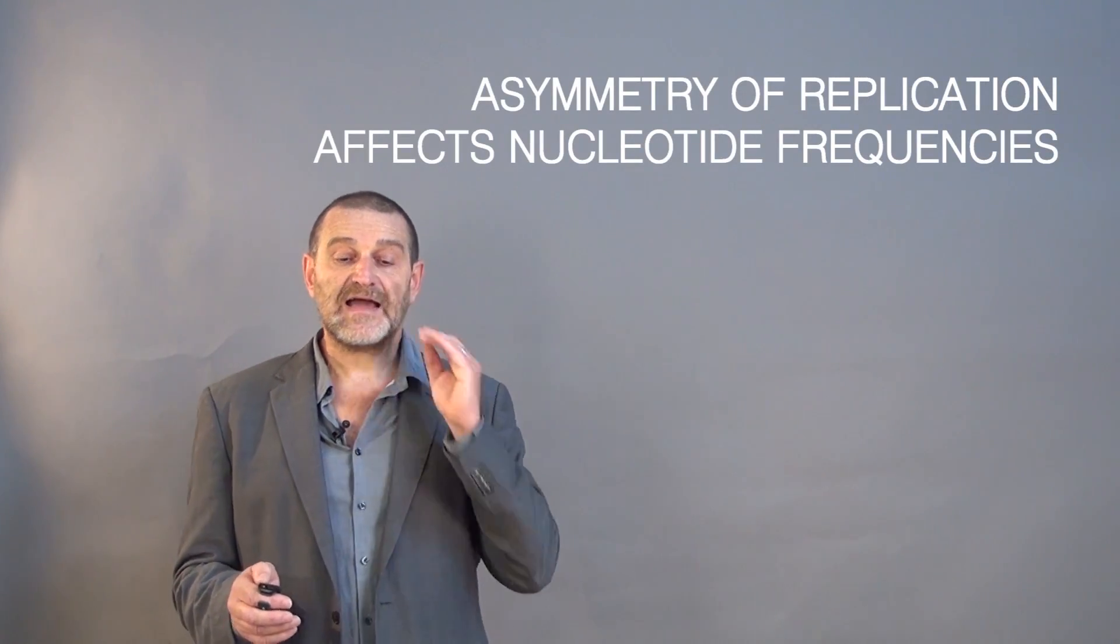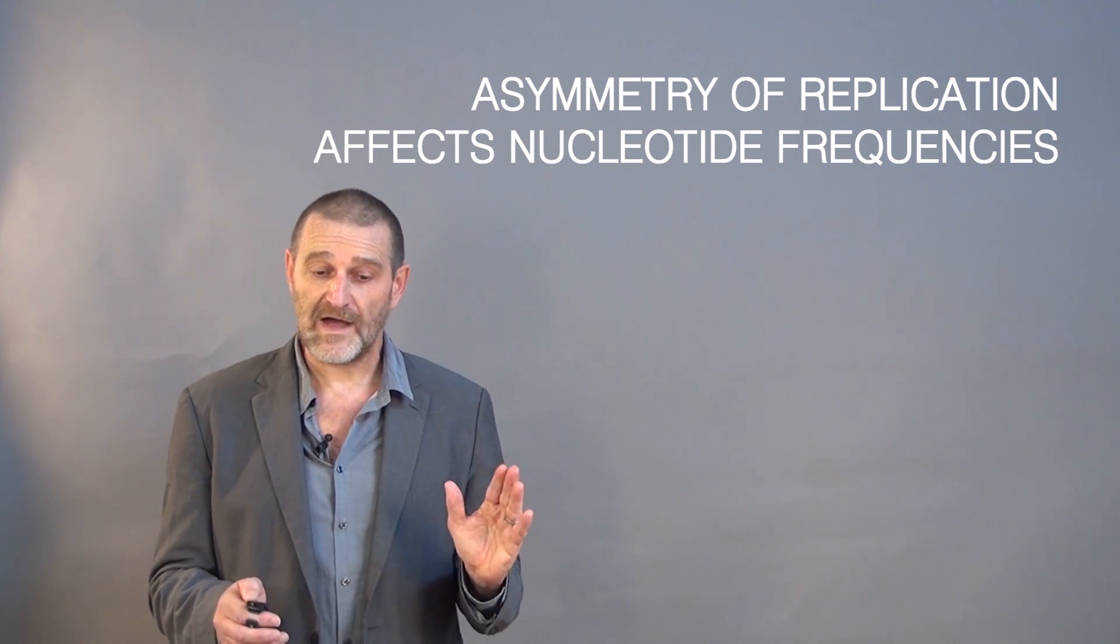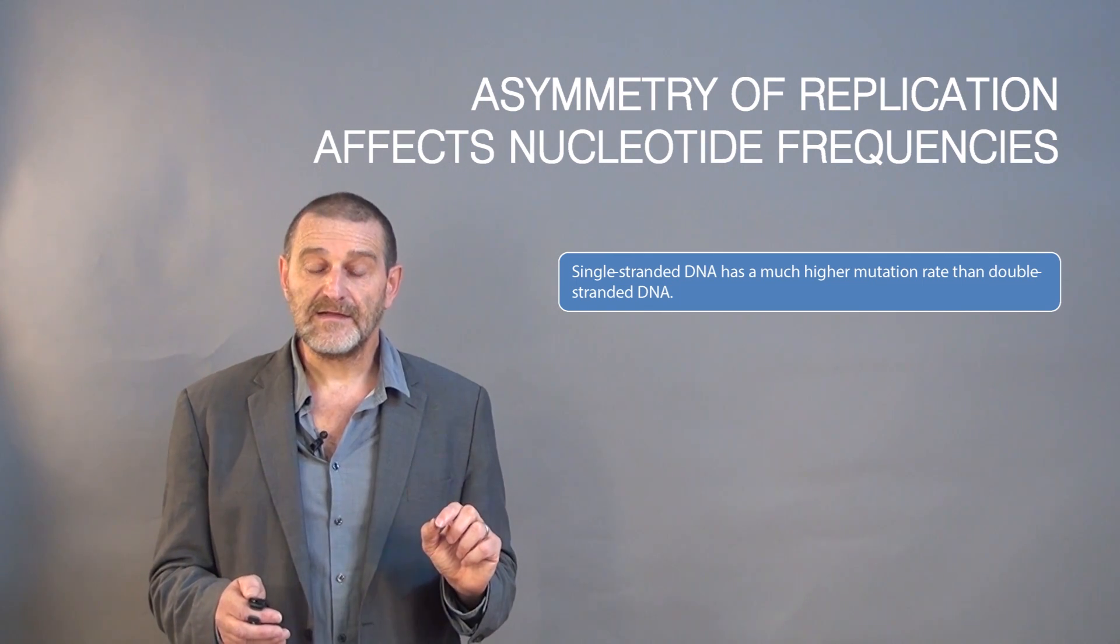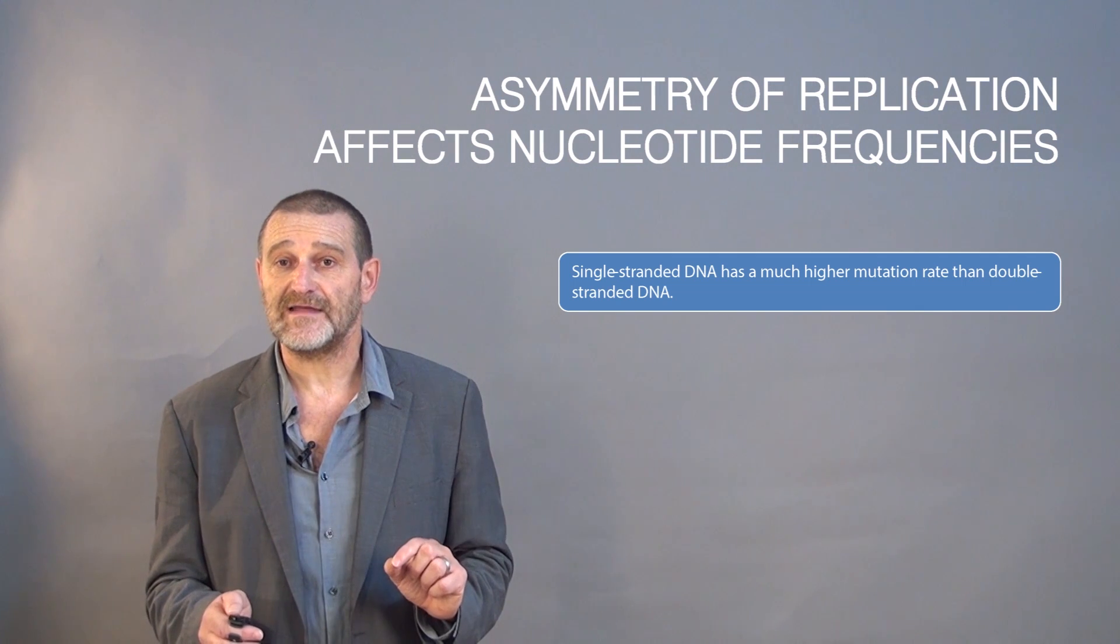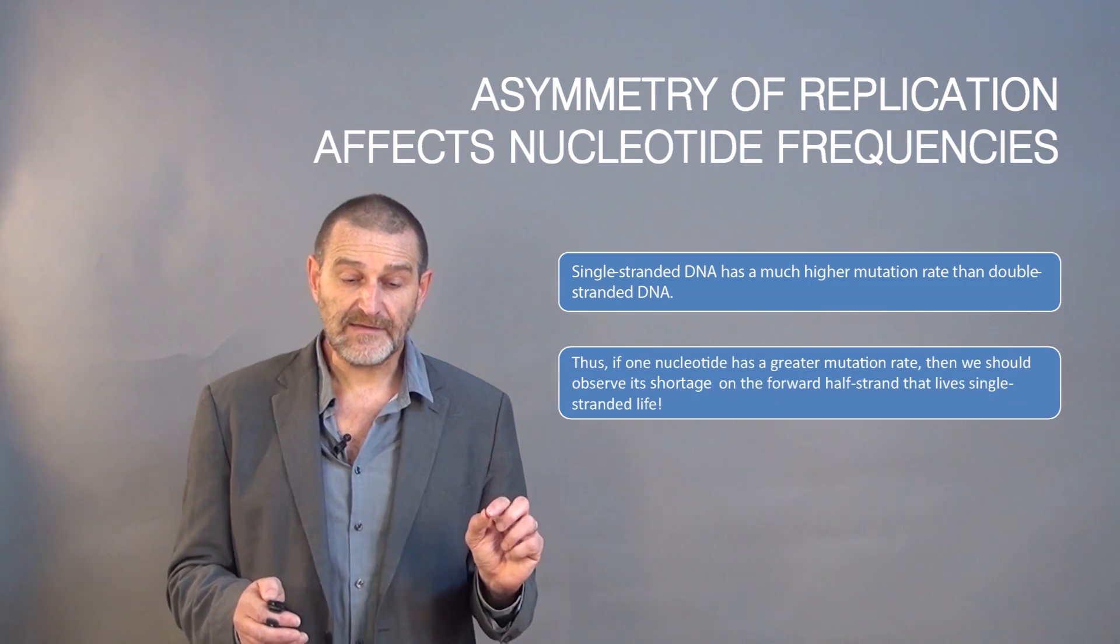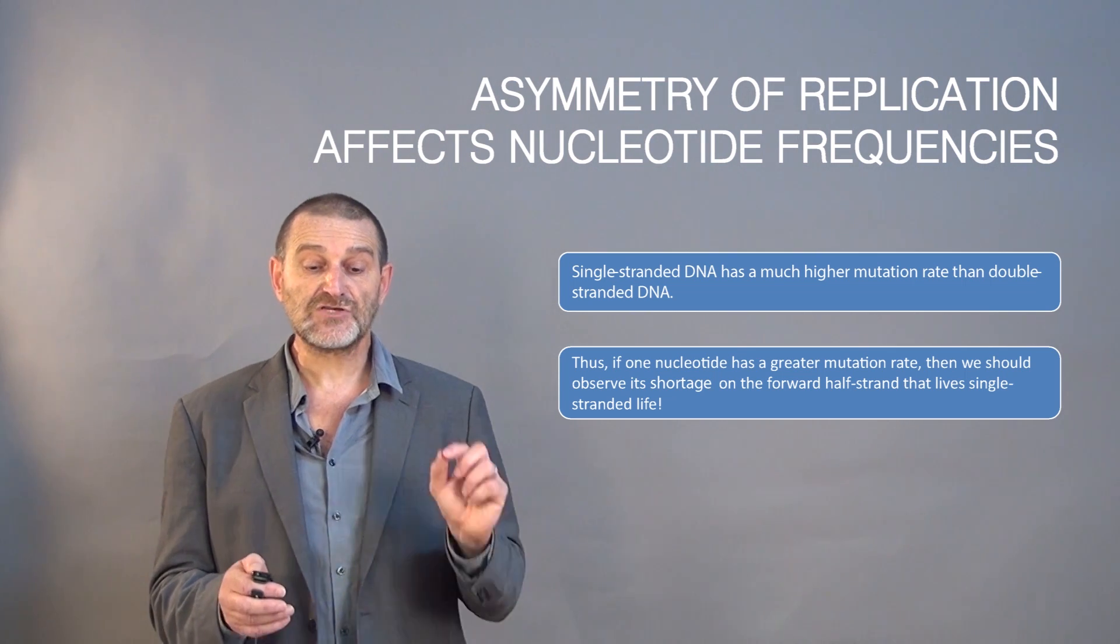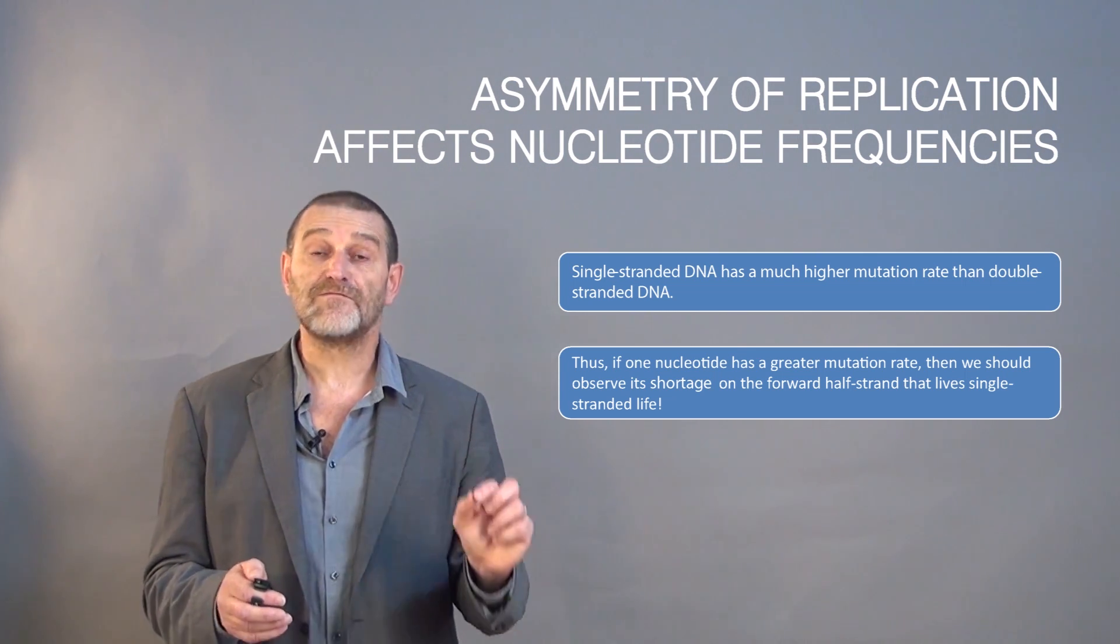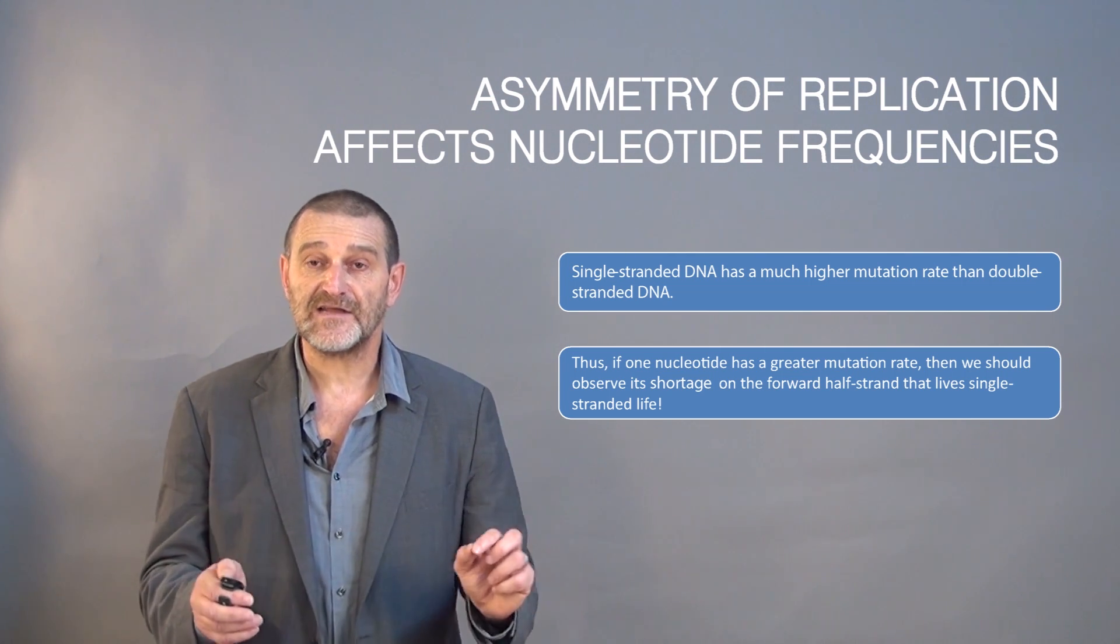Asymmetry of replication affects nucleotide frequencies. Why? Let's think about this. Single-stranded DNA has a much higher mutation rate than double-stranded DNA. That's why if one nucleotide has a greater mutation rate, then we should observe a shortage of this nucleotide on the forward half strand because it spans single-stranded life.